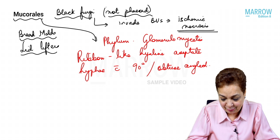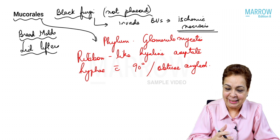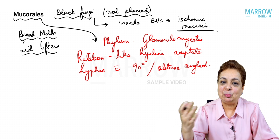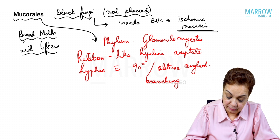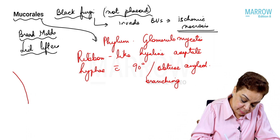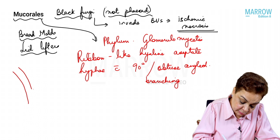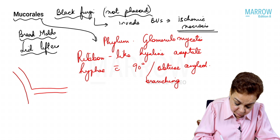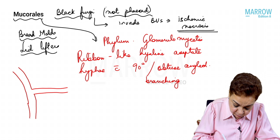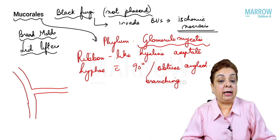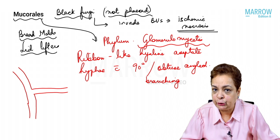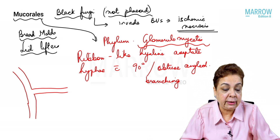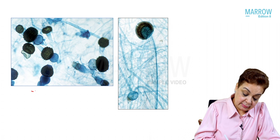They are aseptate hyphae — no melanin — showing 90-degree or obtuse-angled branching. Remember: acute angle is less than 90°, obtuse is more than 90°. Since they belong to phylum Glomerulomycetes, their sexual spores (in the teleomorph state) are called zygospores.